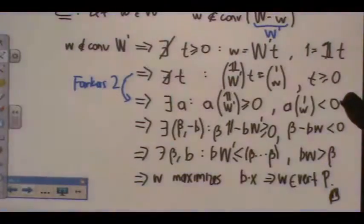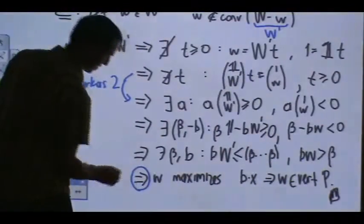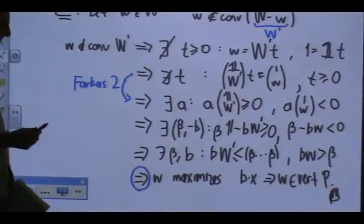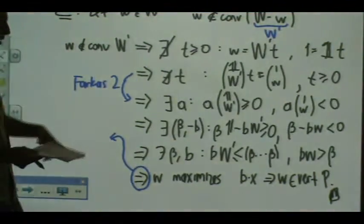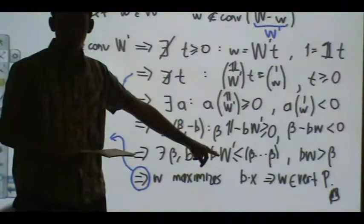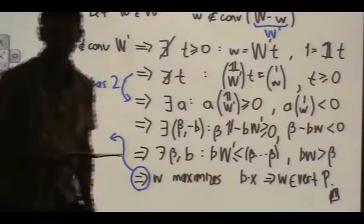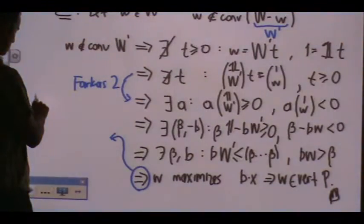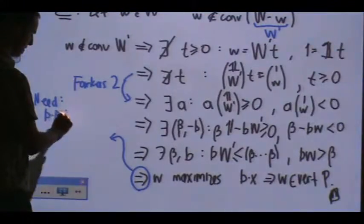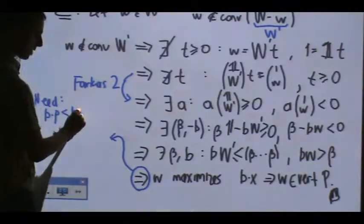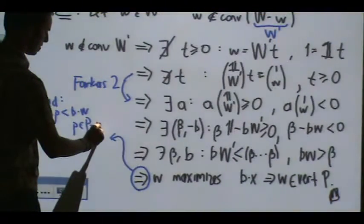So maybe I should say that I'm sweeping something under the rug, which is something small. I agree there's something small to say here. We should also show not only that B dot all the other W primes are less than or equal to beta — I should show that B dot anything is less than or equal to B dot W, for any point P in the polytope which is not W.